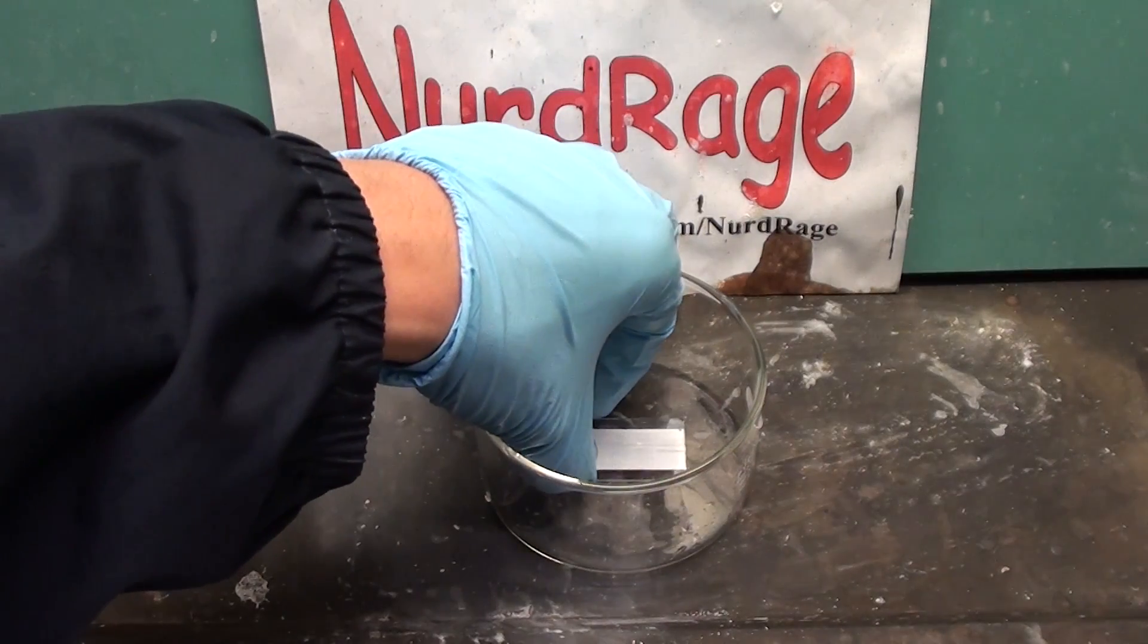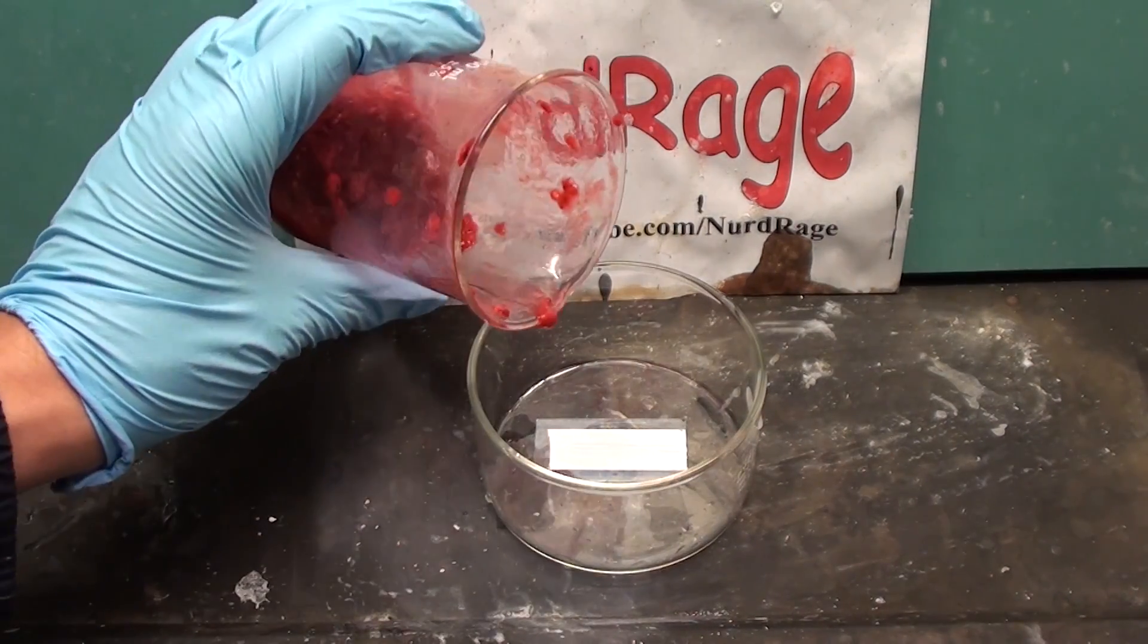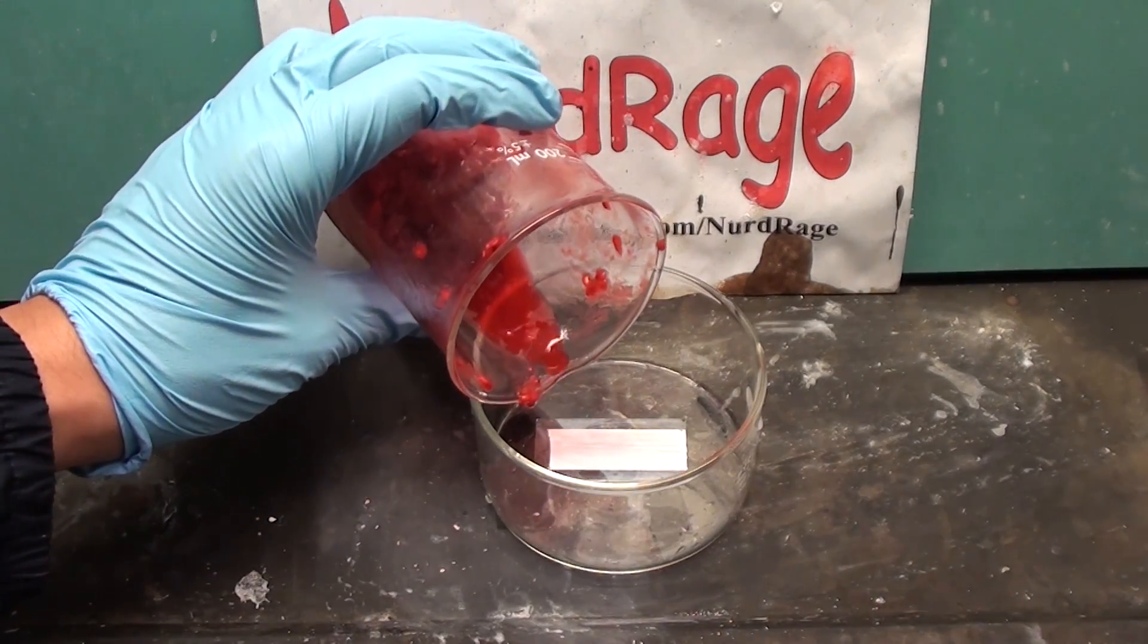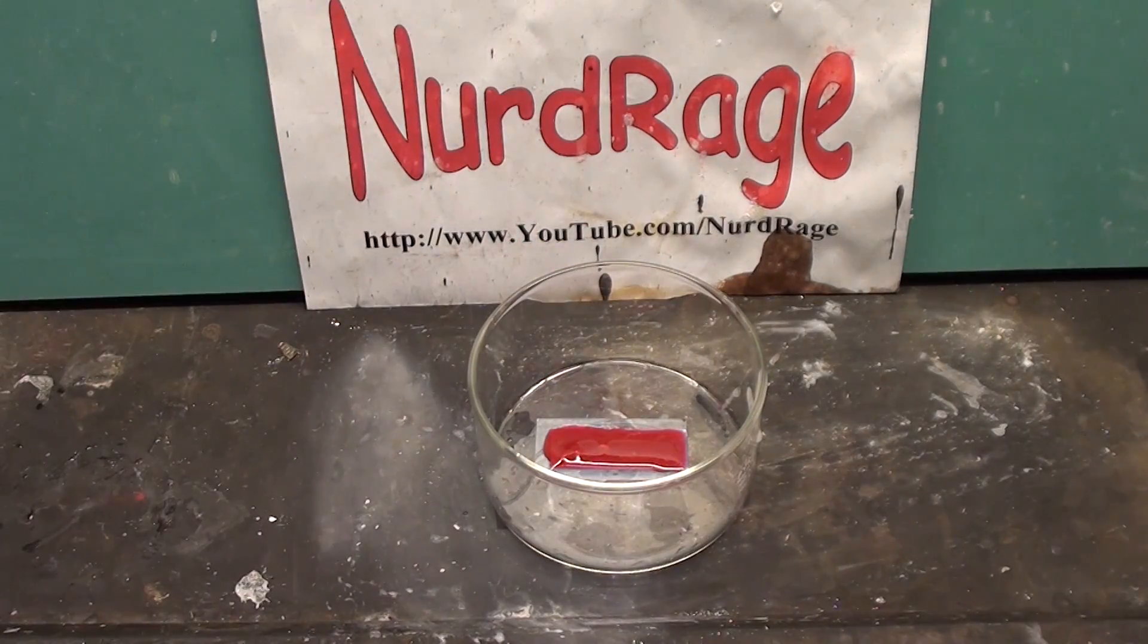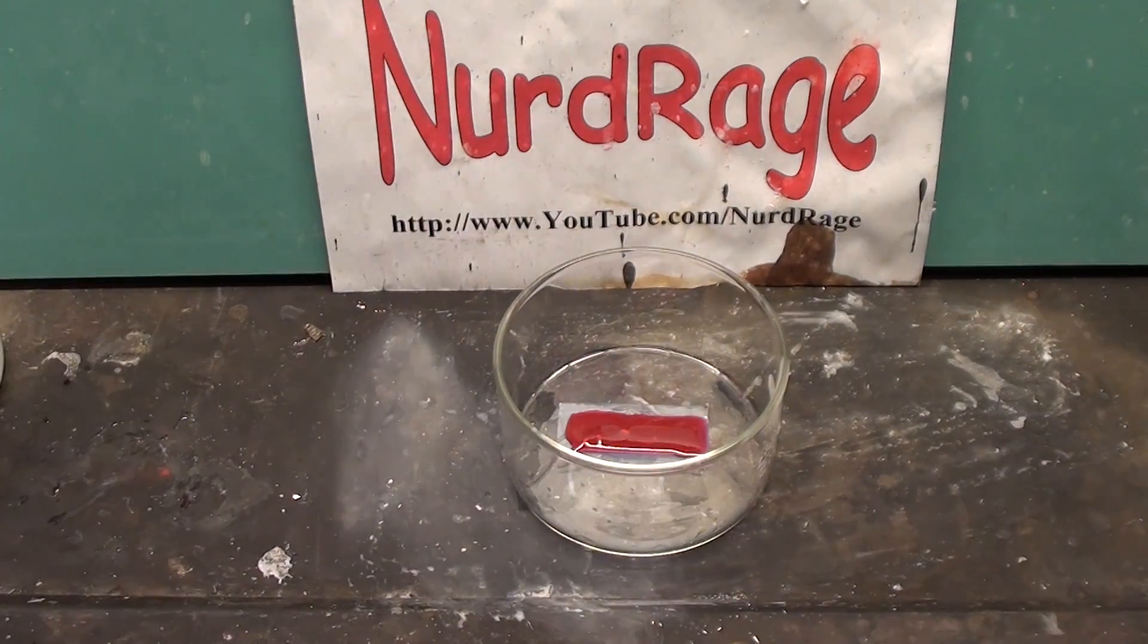Now get the titanium dioxide coated glass and pour over it a few drops of the raspberry juice. Enough to cover the titanium dioxide. Leave it for about three minutes as the anthocyanin dyes bind to it.